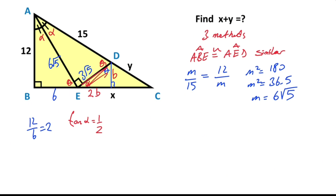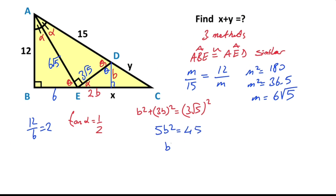For this triangle, if you apply the Pythagorean theorem: b squared plus (3b) squared equals (3 root 5) squared. Therefore 5b squared equals 45, that means b squared equals 9, so b equals 3 units.